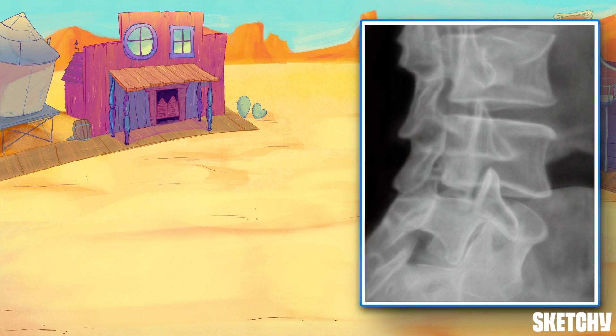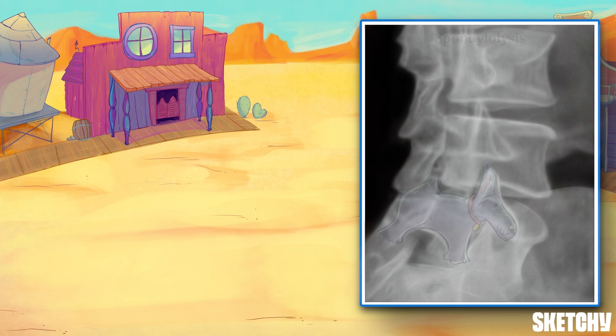There's a classic finding here on this lumbar film. This Scotty dog here will help you out — he has a collar on. Right at that collar line, there's a small fracture. We call this pathologic finding spondylolysis, and the radiological finding is called the Scotty dog sign.